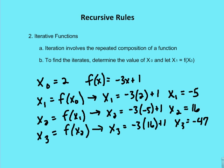The other thing we're going to talk about in this section is iterative functions. An iterative function involves a repeated composition of a function. Typically, we'll start out with some value x sub 0 — that's not really the first iterate, that's just the first value. The first iterate you'll find will be x sub 1, and we find it by using the value of x sub 0 in the function.